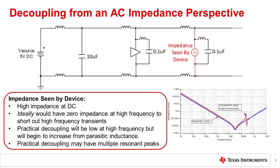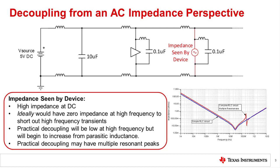A different way of looking at decoupling is to consider the AC impedance seen by the device power supply terminals. Ideally, this impedance would be high at DC and low at high frequencies to effectively short out power supply transients. From a practical perspective, the impedance of the decoupling network will decrease to low levels at high frequency, then start to increase again from the parasitic inductance. The process of optimizing decoupling is to minimize this parasitic inductance. Some decoupling impedance networks will have multiple resonant peaks that could introduce noise problems.